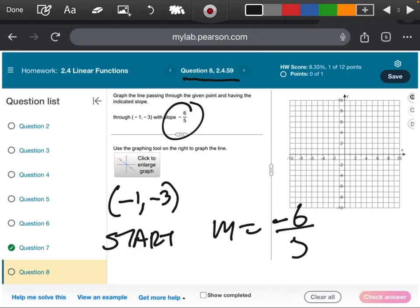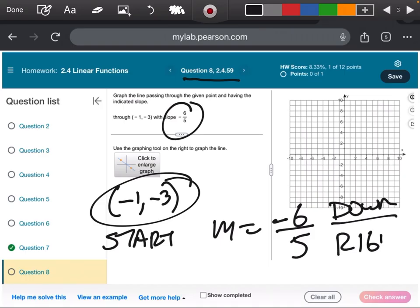I'm going to think about that as negative six over positive five. What I'm going to do is once I plot this point, I'm going to go down six spaces and then go to the right five.